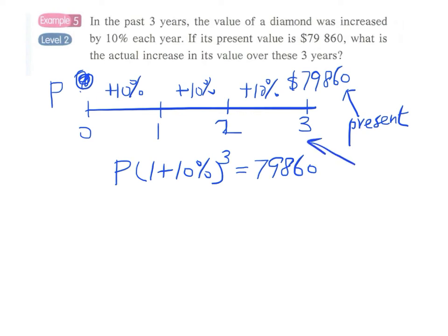Again, we have to write down the meaning of P. Let P be the original value of the diamond.